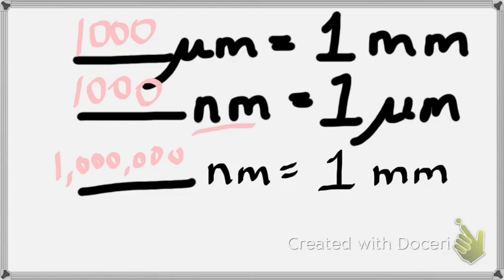Count the number of zeros — there should be six, so that's 1,000,000. Nanometers are for measuring really, really small things we can't see with a light microscope, like a virus, or little cell parts like ribosomes. NM means really, really small. Micro means small, nano means really, really small.